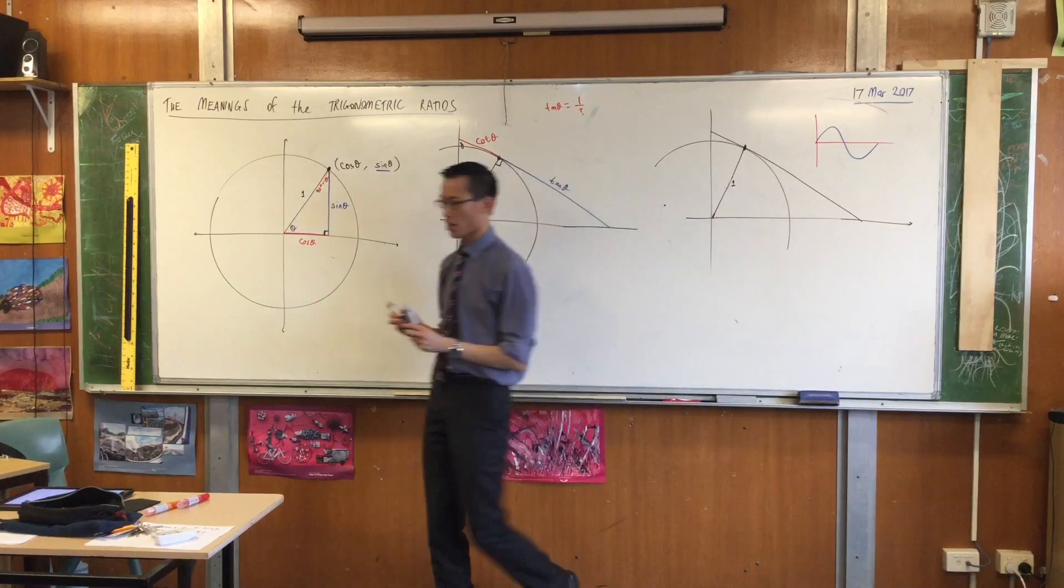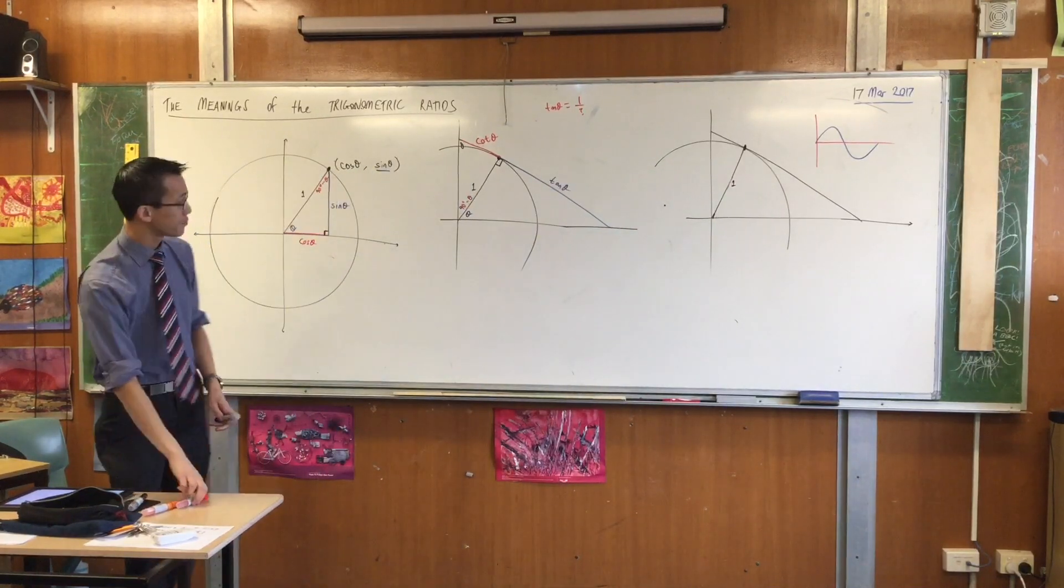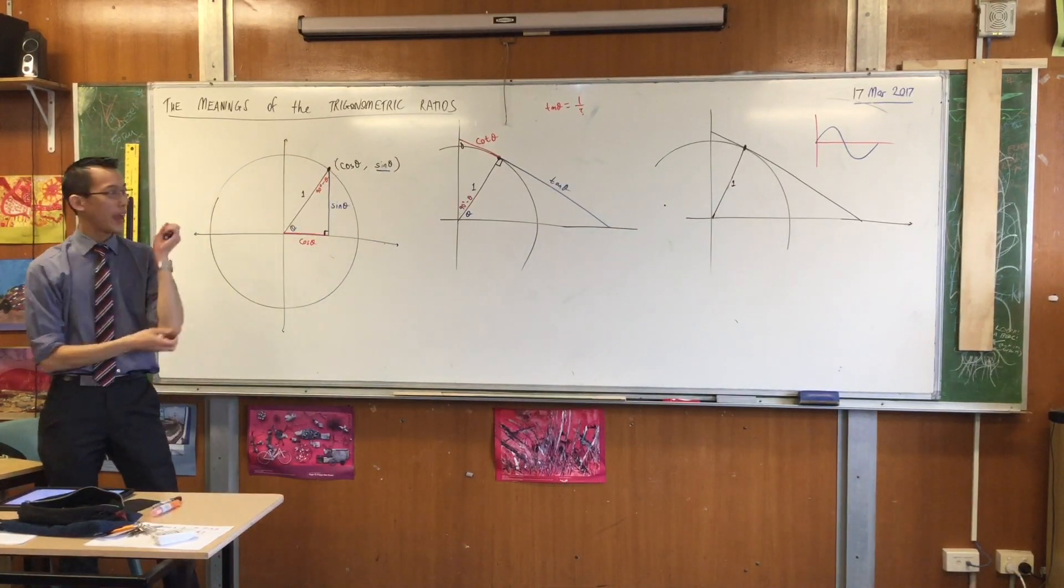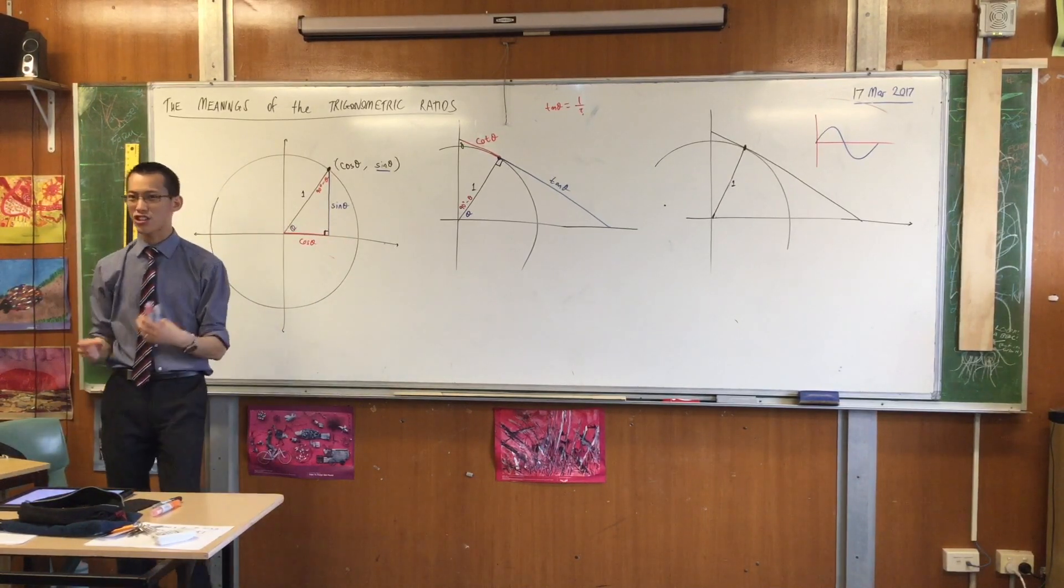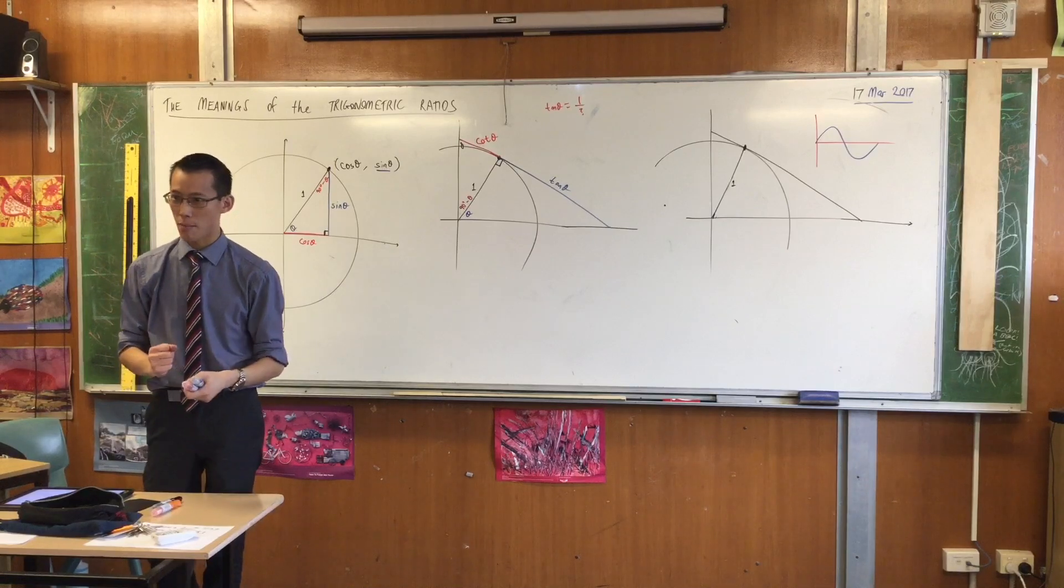So we're still on the unit circle. But now, we're going to get where sec and cosec come from. And I wonder if, by going through this process, you're starting to have some guesses as to where it might be.